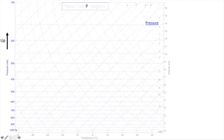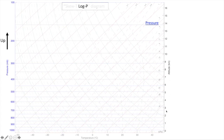This pressure axis ranges from typical sea level pressures of around a thousand millibars to pressures typical of the upper troposphere or lower stratosphere of around a hundred millibars. The log in Log-P refers to the fact that the pressure axis is scaled logarithmically, which can be seen by these hundred millibar intervals increasing in spacing as you go up the vertical axis. These logarithmic decreases of pressure correspond to linear increases in altitude, as we can see on the right vertical axis.